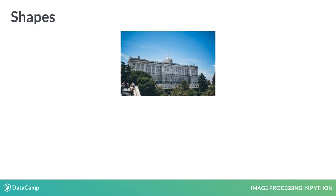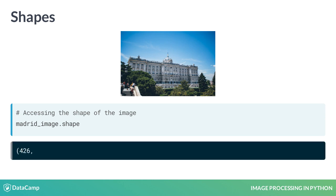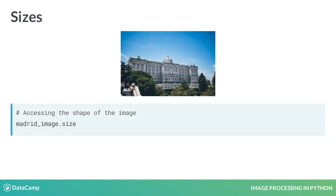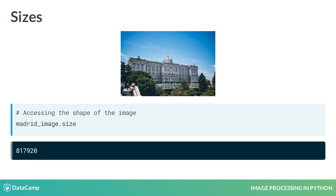Just like with NumPy arrays, we can get the shape of images. This sample picture is 426 pixels high and 640 pixels wide, and it has 3 layers for color representation. It's an RGB image, so it has a shape of 426, 640, and 3, and a total number of pixels of 870,920.